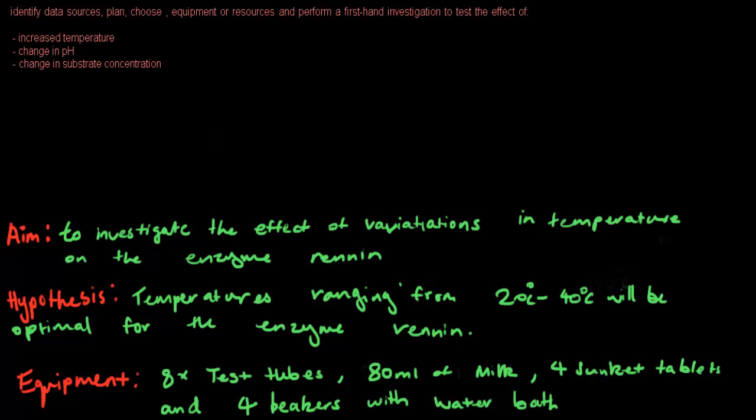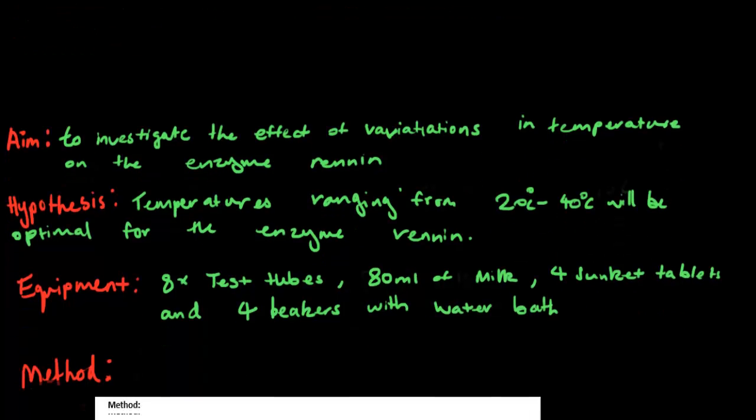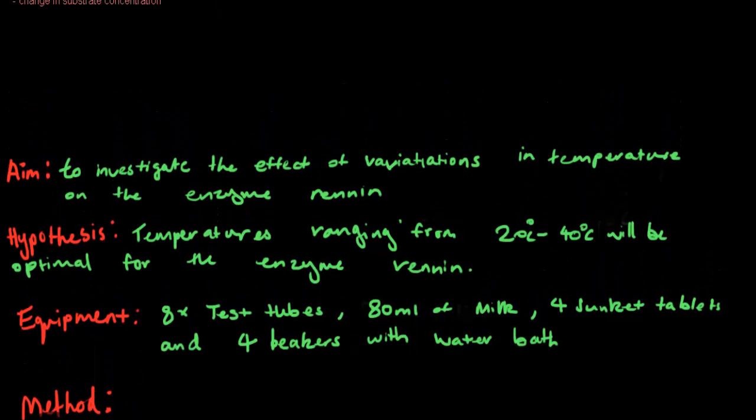First, we're going to check what increased temperature does to enzymes. Our aim is to investigate the effect of variations in temperature on the enzyme renin. Renin is an enzyme found in mammalian stomachs and is responsible for the coagulation of milk.